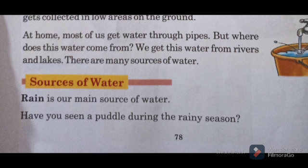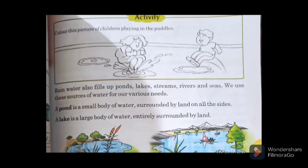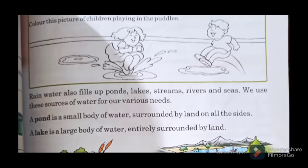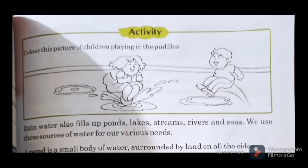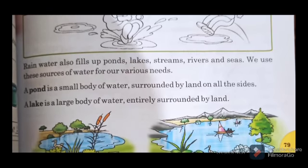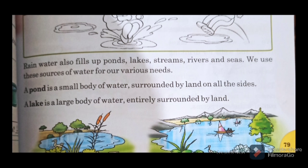Rain is our main source of water. Have you seen a puddle during the rainy season? On the next page, the activity is to color this picture of children playing in puddles. Rain water also fills up ponds, lakes, streams, rivers and seas. We use these sources of water for our various needs.